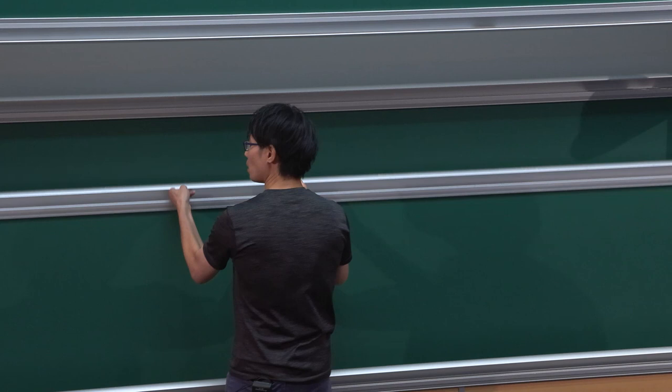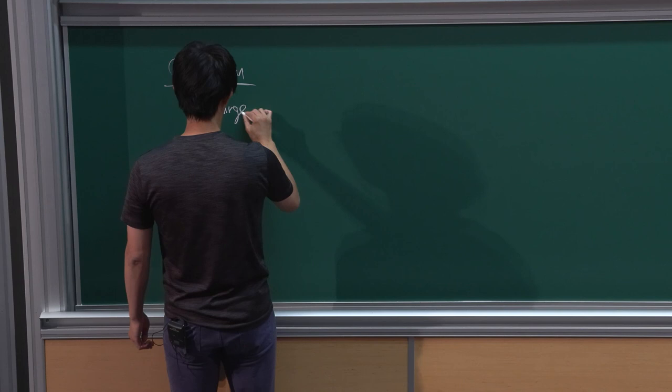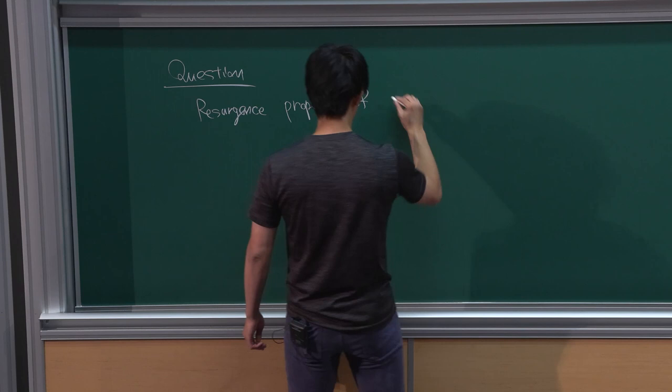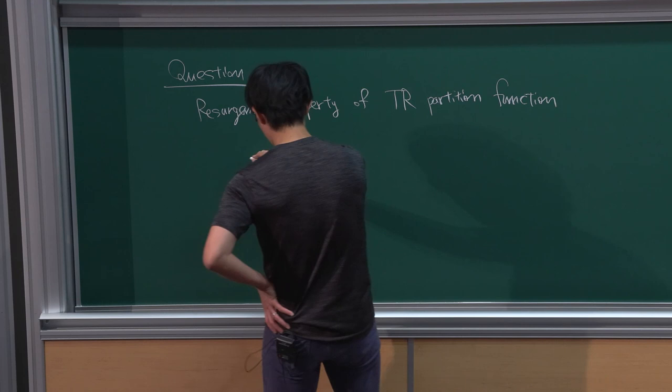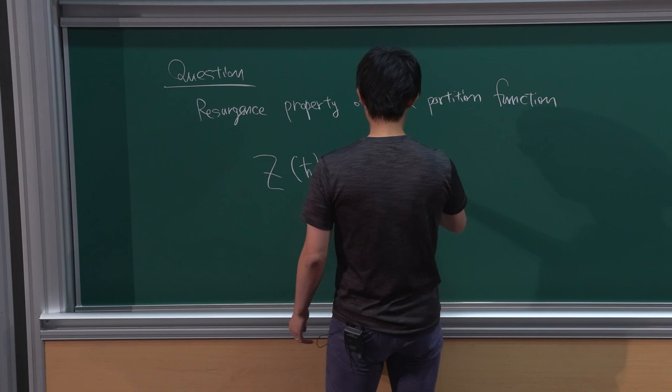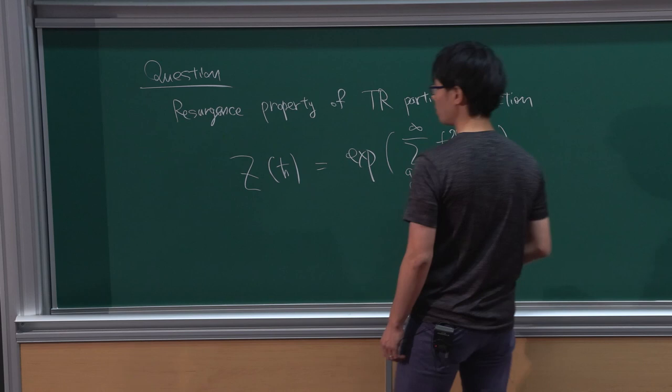The main question I want to discuss today is: what is the resurgence property of topological recursion free energy, or partition function? The partition function is usually denoted by Z, which is some power series in h-bar. It is obtained by the generating series of these free energies. This is my main question.